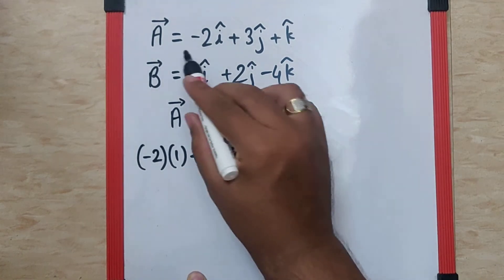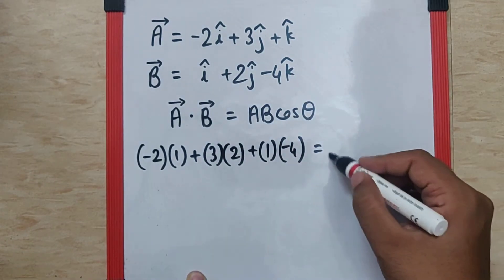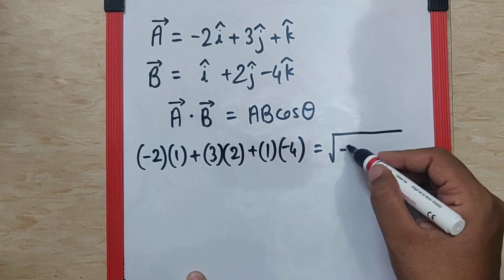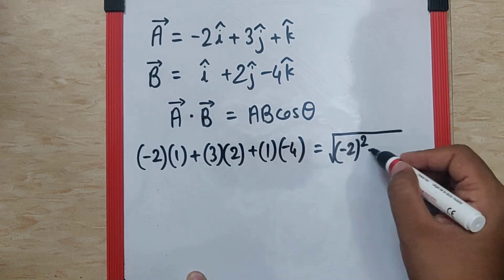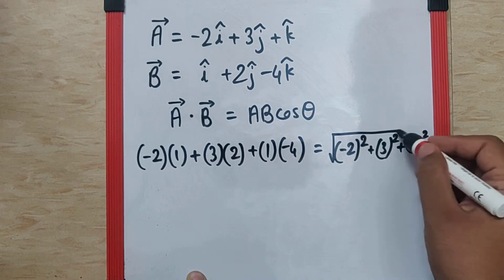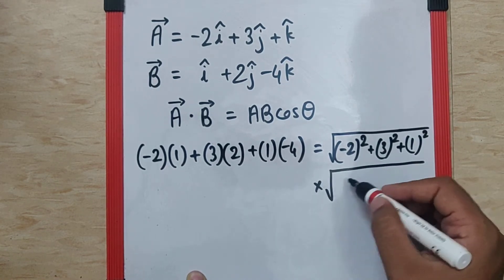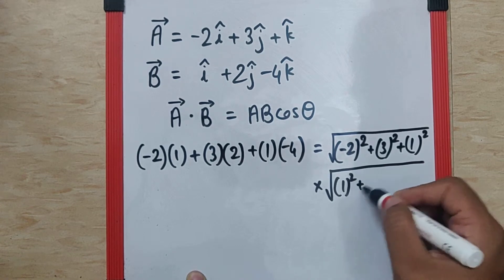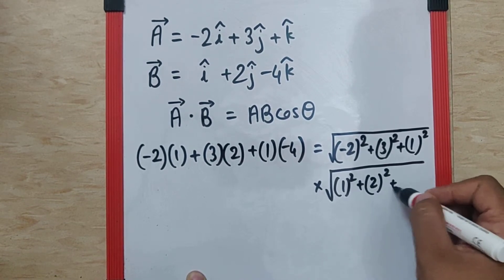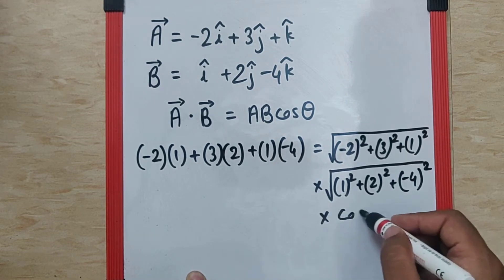On the other side, A is the magnitude of A and B is the magnitude of B bar that will be root of square of minus 2 plus square of 3 plus square of 1 as magnitude of A into square root of square of 1 plus square of 2 plus square of minus 4 into cos theta.